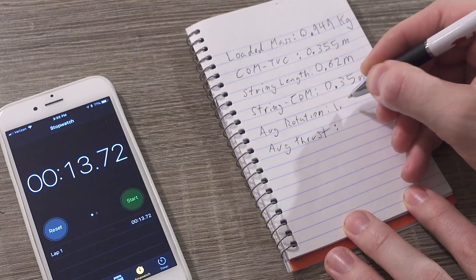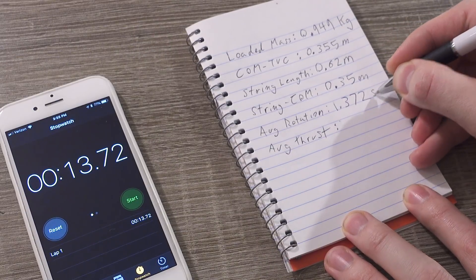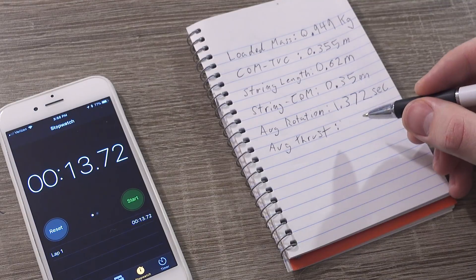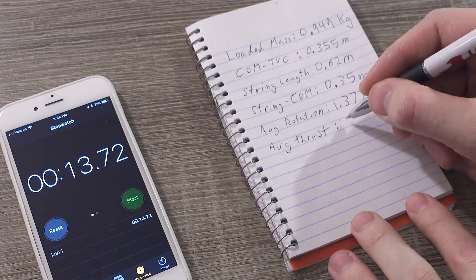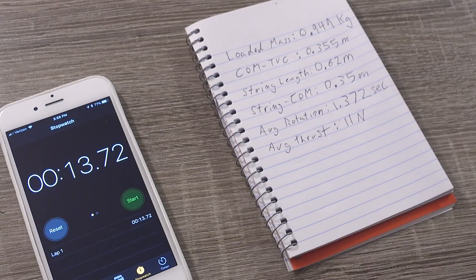Once again, 10 oscillations took 13.72 seconds, which means the average time is 1.372 seconds. And that's what we'll write down. The last step is to write down the average thrust of the motor you're using in newtons. I'm using a G11 from Aerotech, which has an average thrust of 11 newtons.